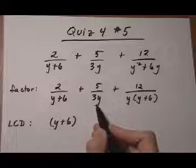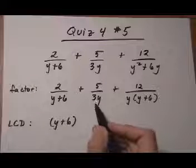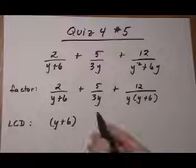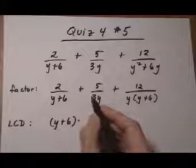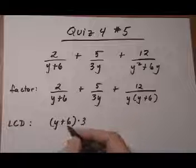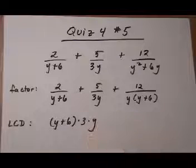Now you look at the second denominator, and if there are any factors that are in the second denominator that are not contained already in the LCD, you need to multiply them in. So the 3 is being multiplied, it's a factor, I need to put it in, because I didn't see it in the y plus 6. And the y is a separate factor also.